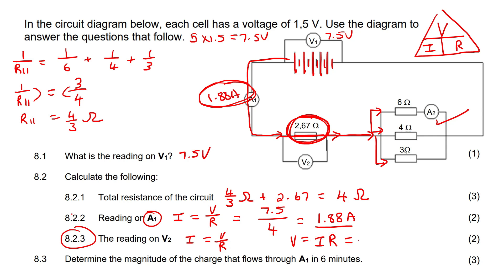So when we're doing this calculation, we can use 1.88 and we can use the 2.67. If we do that, we end up with 5.02 volts.